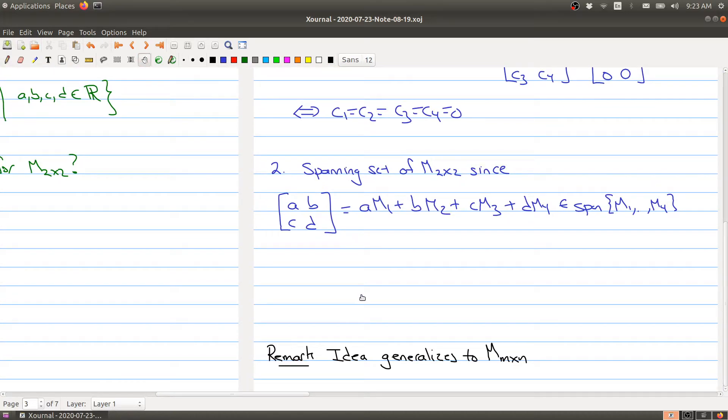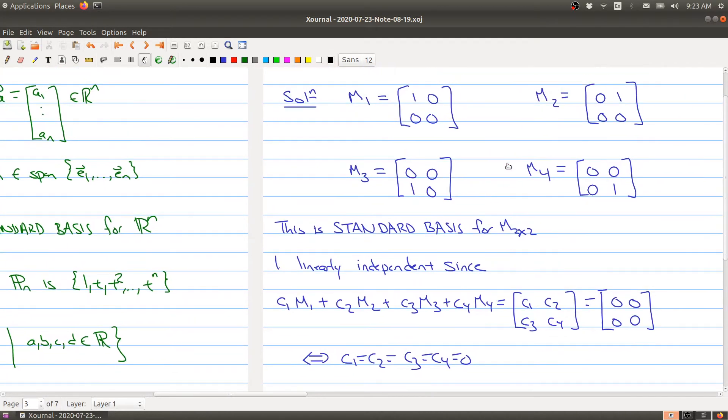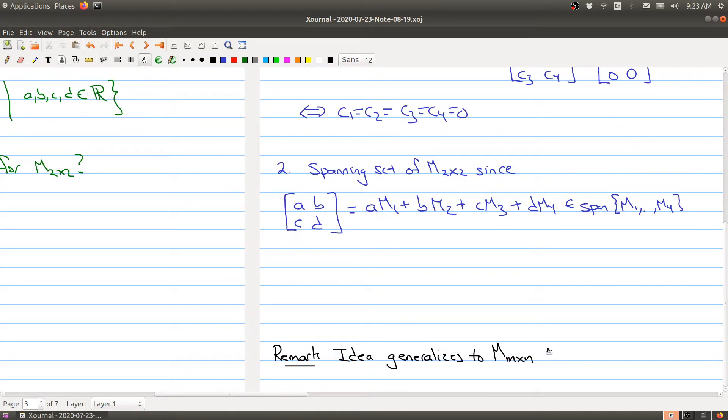And as you can see, there's nothing really special about M22 here. This idea will generalize to all M by N matrices, where in that case our standard basis would be taking a matrix where we have one in exactly one spot and then the rest of the entries are zero. So our standard basis for M by N would have M times N different matrices. So that gives you another example of a basis.